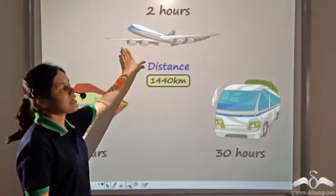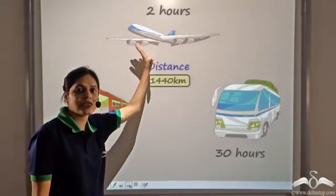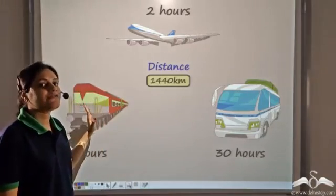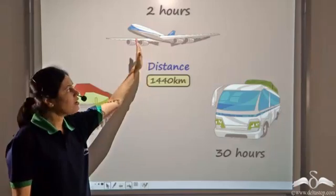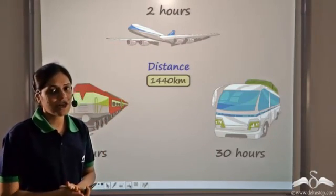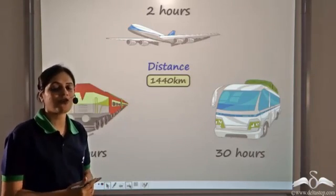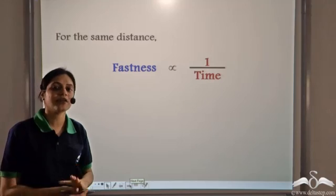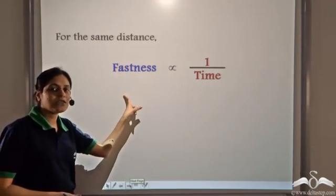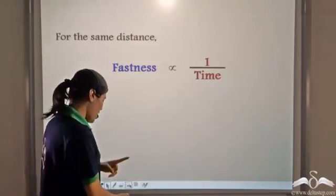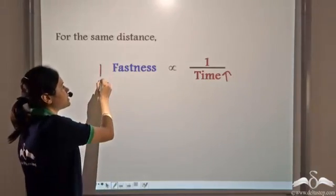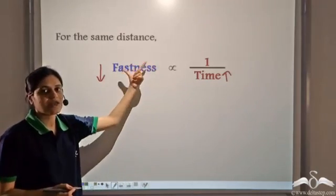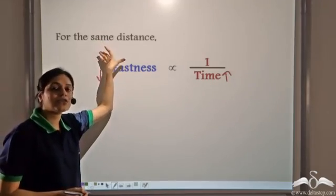We say that the plane is the fastest because it takes the least time. Train takes more time than plane but less than bus, so train is faster than bus but slower than plane. What we are trying to say is that the transport which takes fewer hours is faster. So for the same distance, fastness is inversely proportional to time: as time taken increases, fastness decreases, and as time taken decreases, fastness increases.